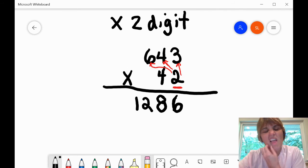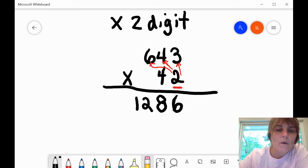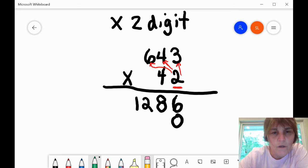Then, before we move on, we need to put a zero here to hold the place. All right, so now what we're going to do is we're going to take this four, and we're going to multiply it times three, then times four, and then times six. And this zero here holds the place because we're in the tens column here, so we want our first answer to go in the tens column here.